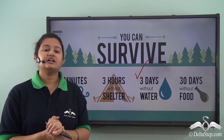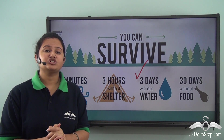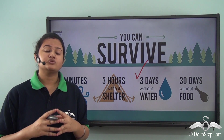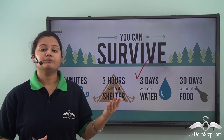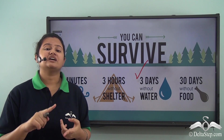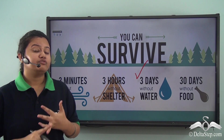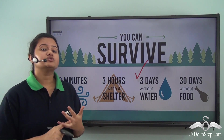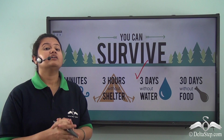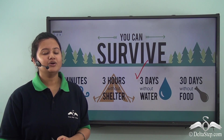Initially we started by understanding the definition of water pollution, then discussed the various ways that cause water pollution — domestic sewage, industrial effluents, and agricultural malpractices. Further, we discussed various ways in which we can conserve water. That's all about today's lesson.